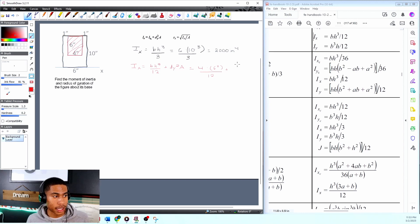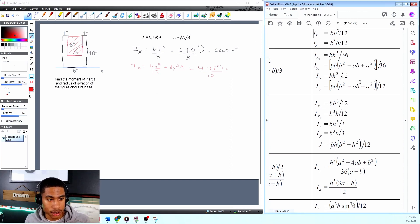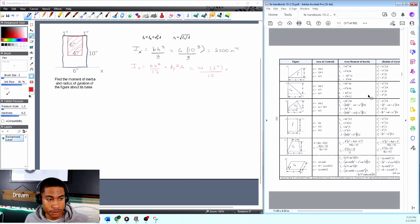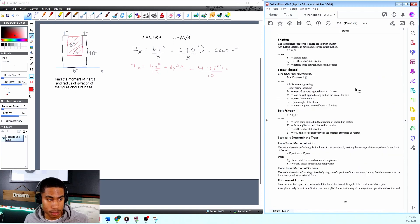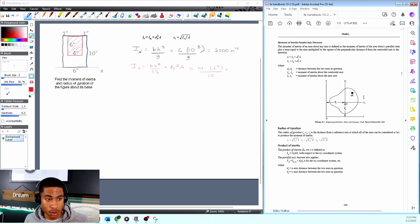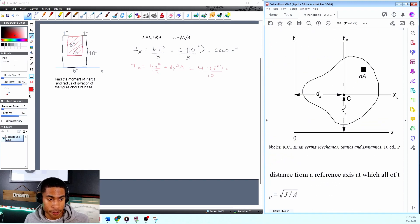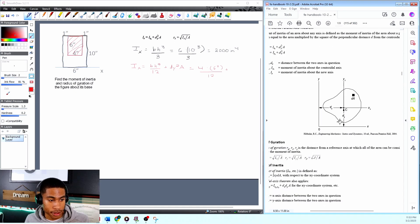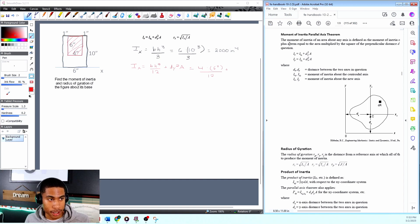What is dy? I'm glad you asked. If you ever get confused about anything on this exam, be sure to use the FE handbook. Our dy is just a distance from the centroid of our shape to the axis. dy can be found in your handbook right up underneath the moment of inertia parallel axis theorem.